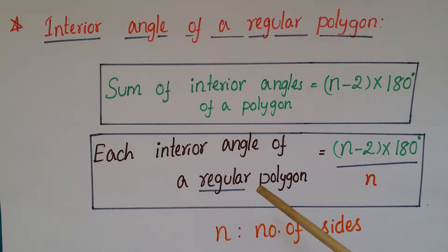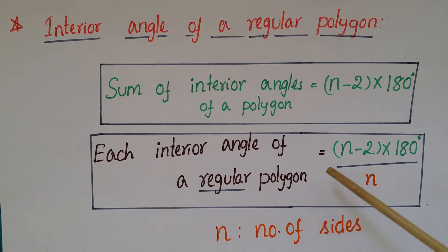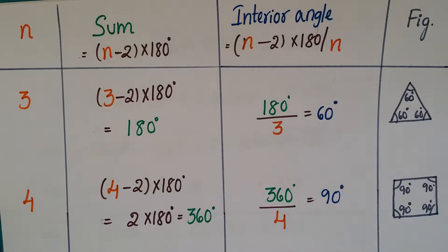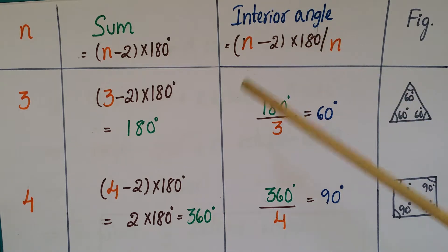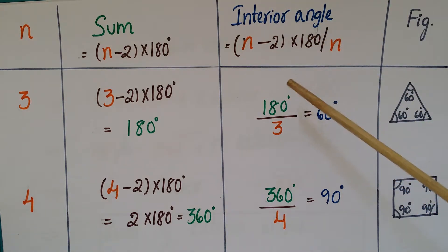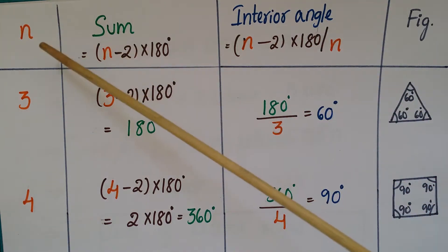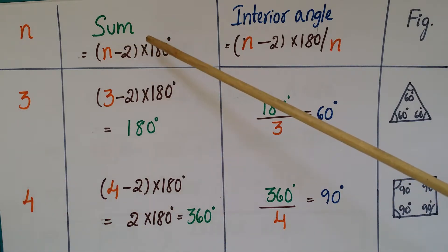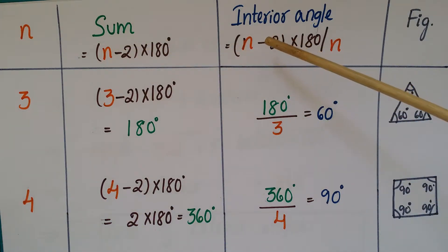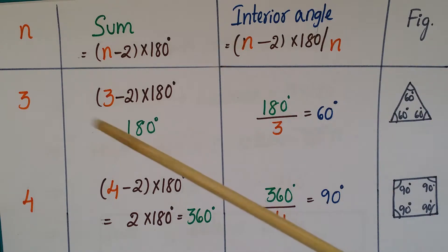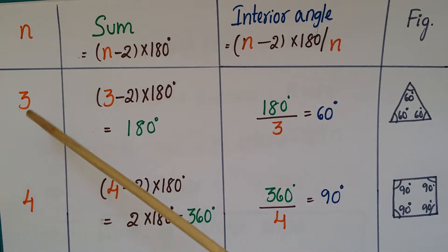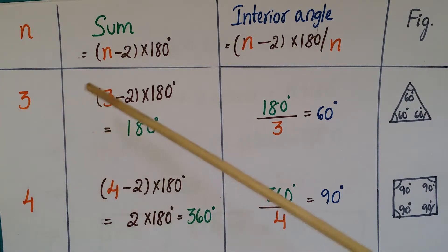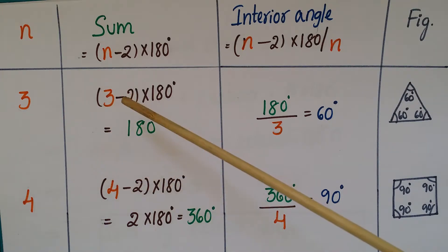This formula can be used only for a regular polygon, because in a regular polygon all angles are equal. We cannot use this formula for irregular polygons. Here I have a table showing how to calculate the interior angles for a regular polygon, with columns for number of sides, sum of angles, interior angles, and a figure.